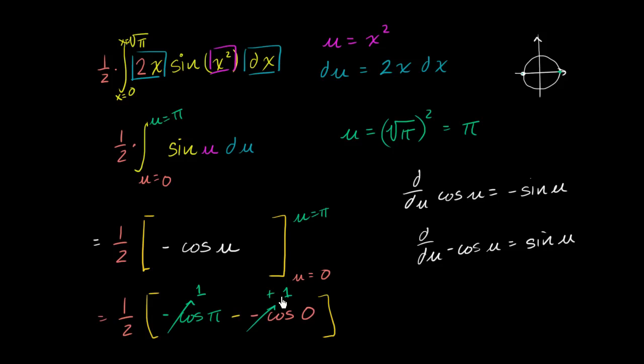And so in here, we have 1 plus 1 times 1 half. So this whole thing simplifies to, ready for our drum roll, 1.